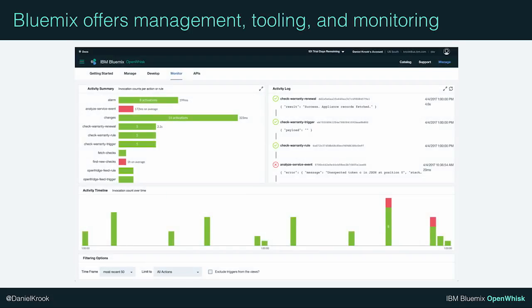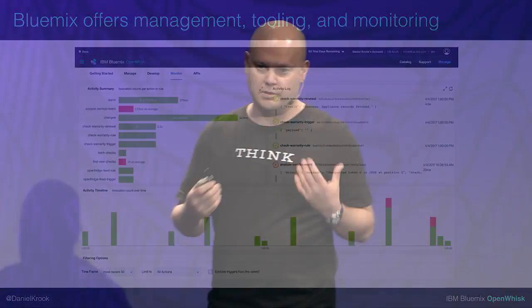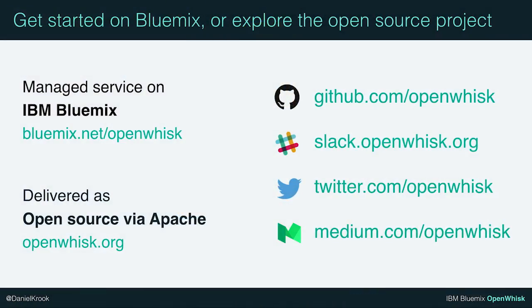There are debugging tools available, as well as execution cost details visible online. There's also a visual monitoring console over and above the open-source project, so you can review your asynchronous actions and find out what the true responses and requests were. If you want to start playing with serverless architectures, go to bluemix.net or explore the open-source project at openwhisk.org. Be sure to attend the OpenWhisk deep dive later this afternoon for a demo and best practices. I've already posted these slides on Twitter — you can download them by following me at Daniel Prok. Thank you very much.